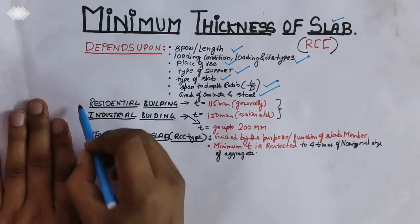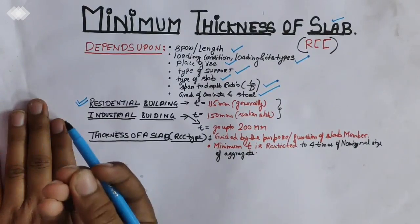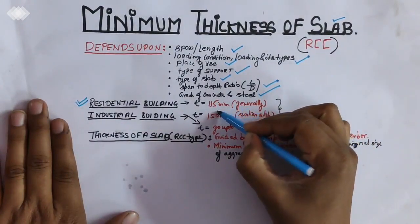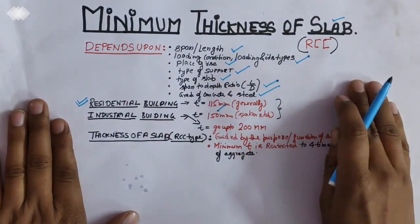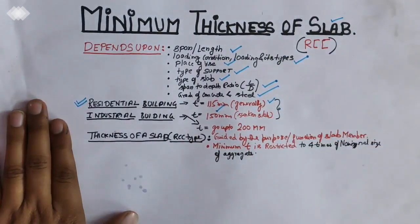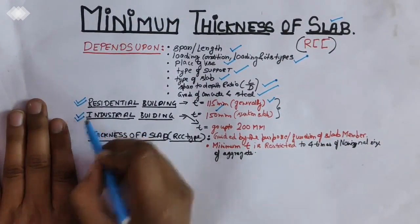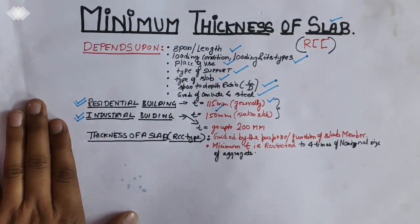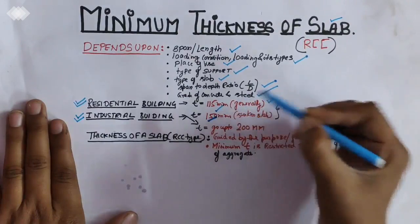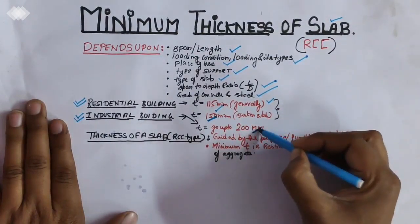Now, if we talk about the residential building, this is what we generally use in India. This is about 115 mm generally we use. If we talk about the industrial buildings, the thickness is 200 mm.